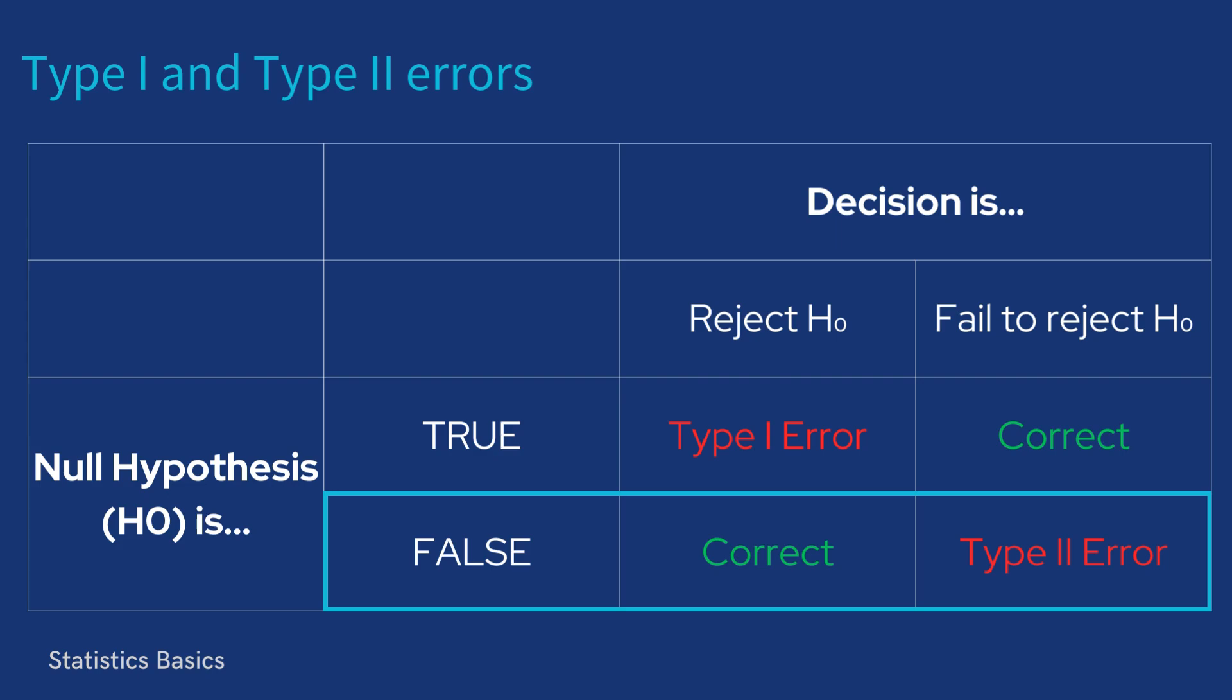When the null hypothesis is false and the decision is to reject the null hypothesis, a correct decision is made. This means we've correctly concluded that there's an effect or difference.